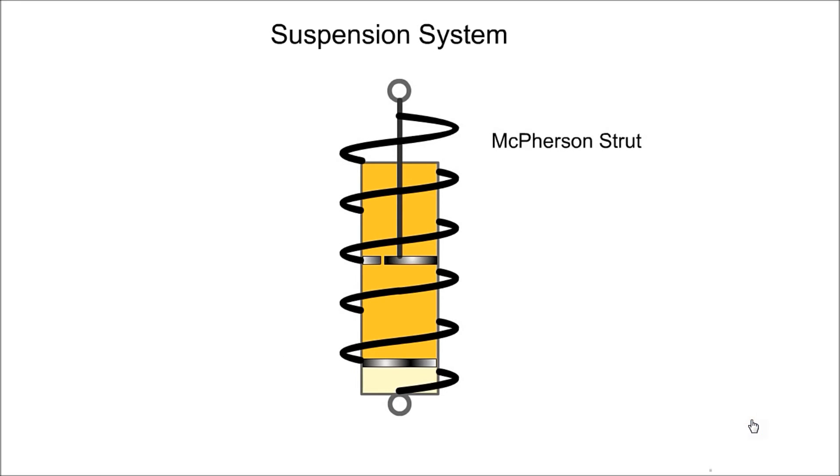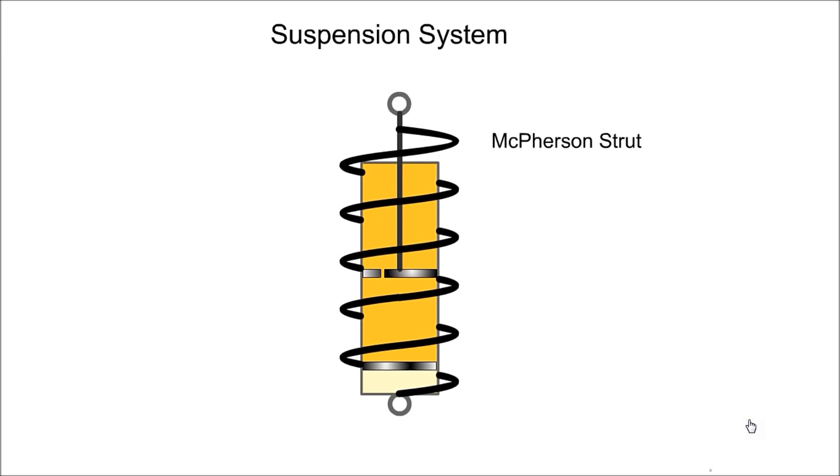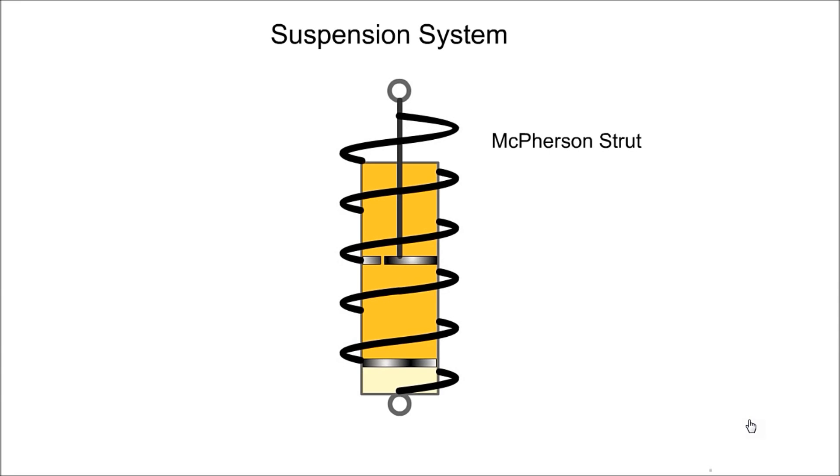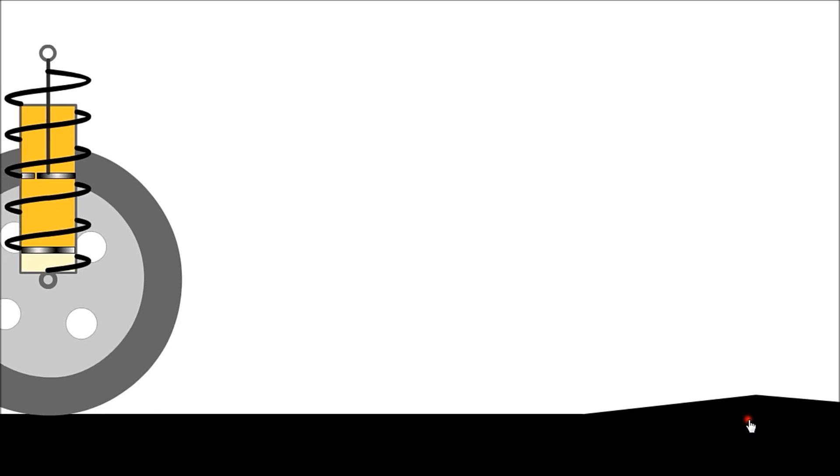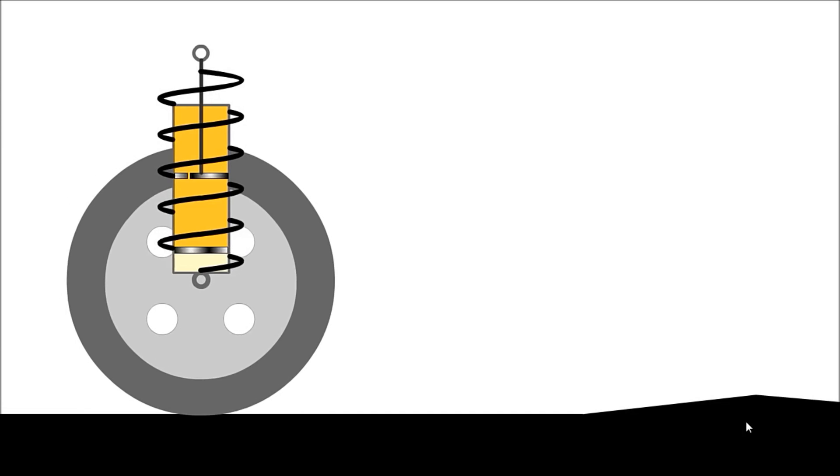A spring and damper are often combined in one unit called a McPherson strut. Here we see the McPherson strut in operation. It provides comfort for the occupants and maintains the wheel in contact with the road.